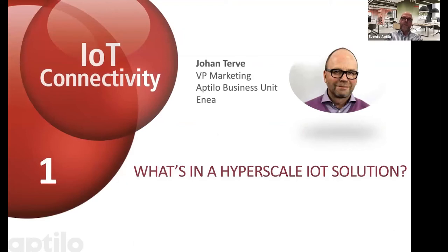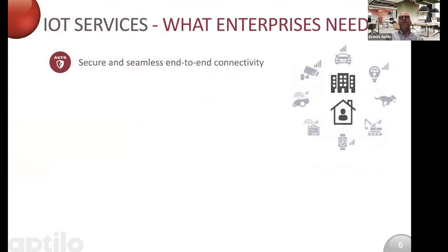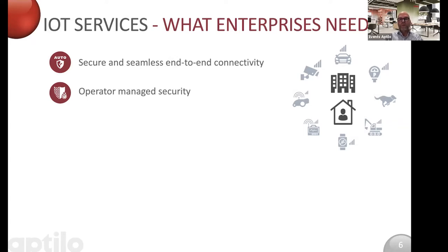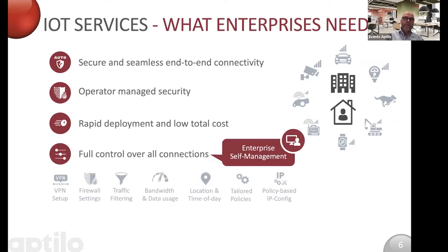What's in a hyperscale IoT solution is the first subject. Let's start by looking at what enterprises really need in terms of IoT connectivity. Of course they need secure and seamless end-to-end connectivity — that's a given. But many of them also need operators to help them manage security so they can configure their own firewalls and security settings. They may also need a fully private VPN connection between the device and their back-end servers. They need rapid deployment at low total cost, and they also need full control over all connections. Enterprise self-management is a very important part of this, and it's also important for operators to be able to scale their business.